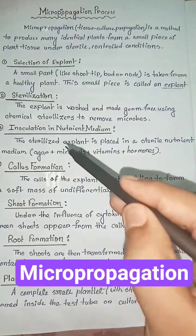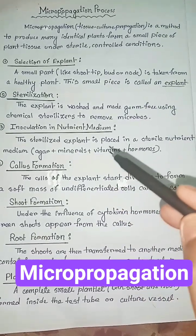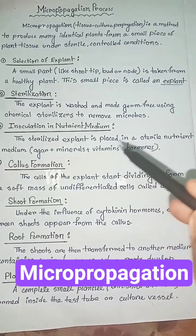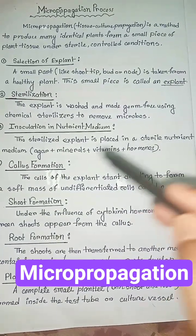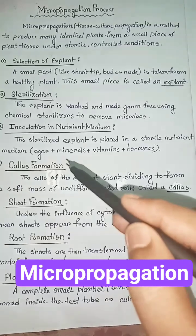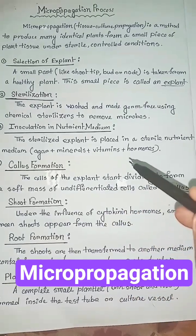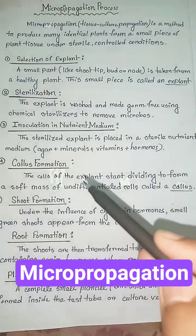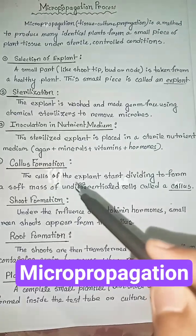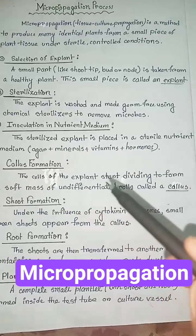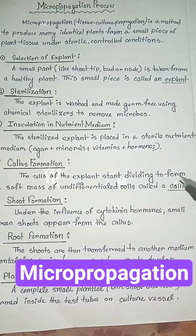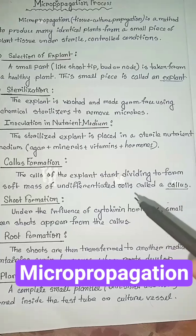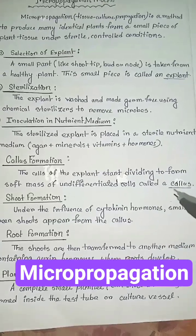Next step: inoculation in nutrient medium. The sterilized explant is placed in a sterile nutrient medium containing agar, minerals, vitamins, and hormones. Next step: callus formation. The cells of the explant start dividing to form a soft mass of undifferentiated cells called a callus.